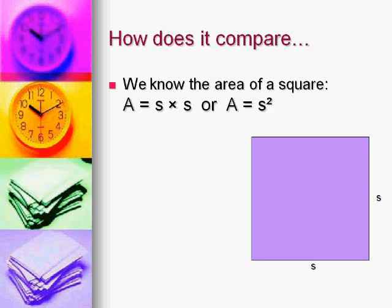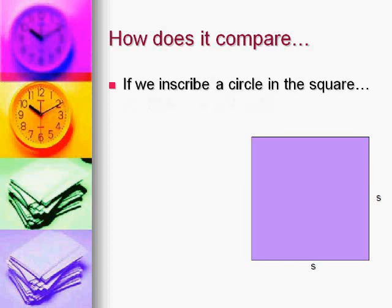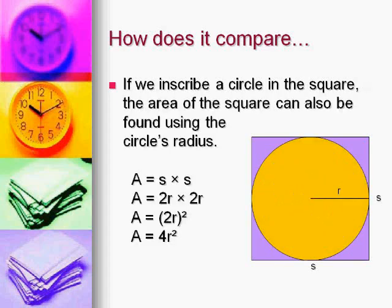We know the area of a square is: area equals side times side, which is a = s × s, or a = s². So if we inscribe a circle in the square, the area of the square can also be found using the circle's radius. So a = side × side = 2r × 2r, because notice how the two radii make up one side. That gives us 2r squared, which works out to 4r².